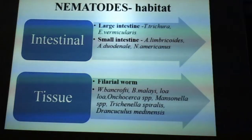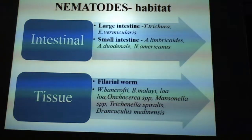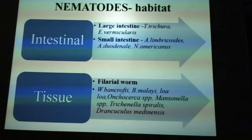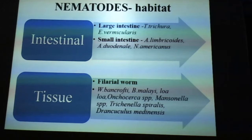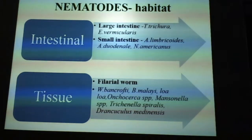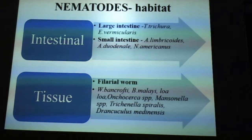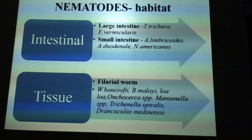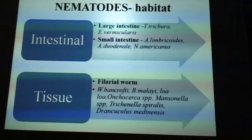Large intestinal nematodes are Trichuris trichura and Enterobius vermicularis. Small intestinal nematodes are Ascaris lumbricoides, Ancylostoma duodenale, and Necator americanus. Tissue nematodes include filarial worms: Wuchereria bancrofti, Brugia malayi, Loa loa, Onchocerca species, Mansonella species, Trichinella spiralis, and Dracunculus medinensis. In this class, we are going to cover one large intestinal nematode — Trichuris trichura — and one small intestinal nematode — Ascaris lumbricoides.